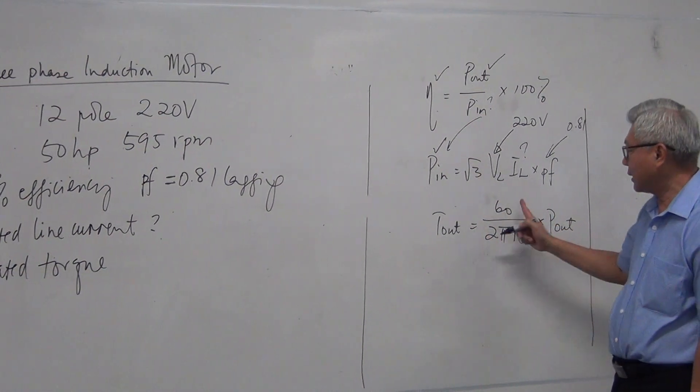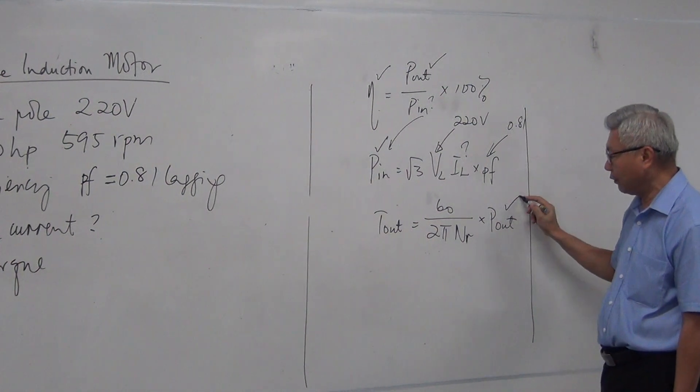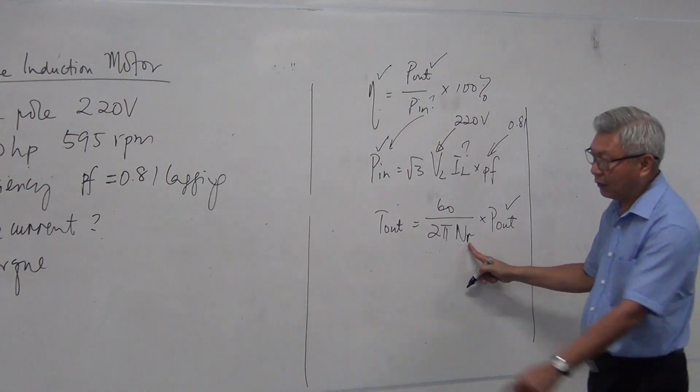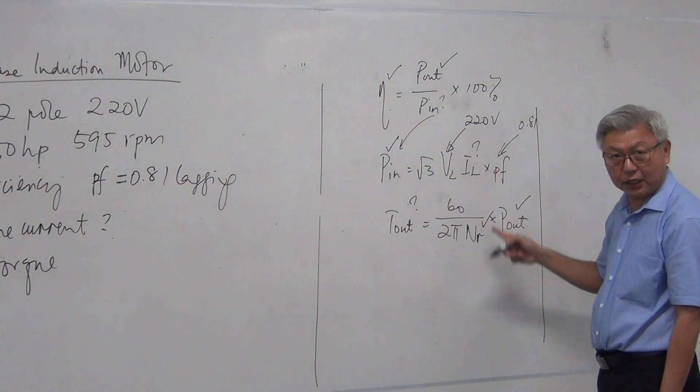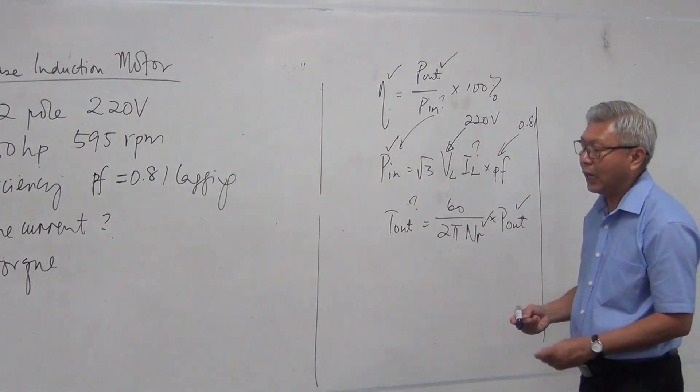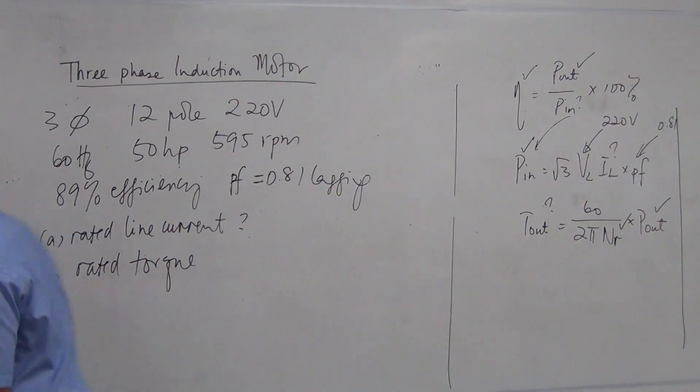And to find torque is 60 over 2 pi n multiplied by output power. With that, I already have my output power, that's 50 horsepower. Speed is given, 595 rpm. So torque can also be found. Got it? So we just make use of this formula to do this mathematical example. So let us go through it.